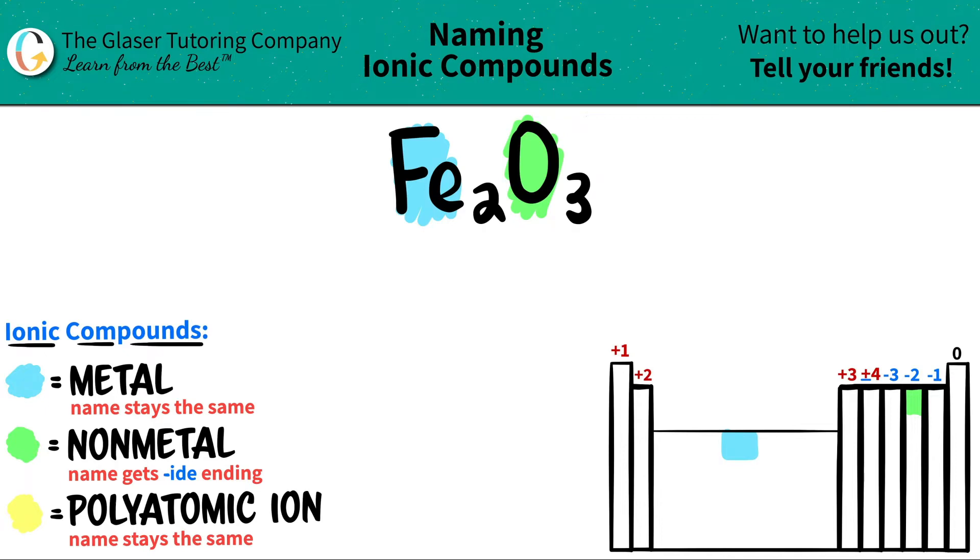Now we're ready to just name them. The metal name, which is iron, the metal always stays exactly the same. So if this was iron before, it's going to be iron in the name. So Fe is iron.